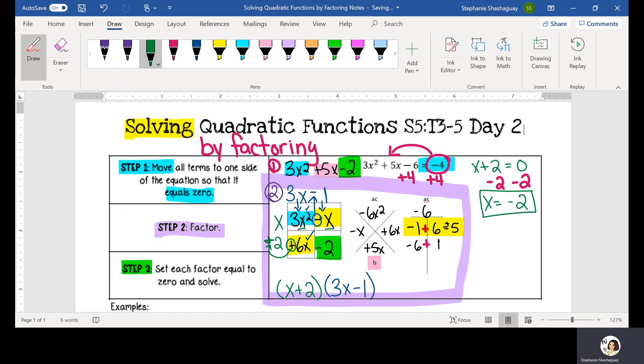Then I'm going to take my three x minus one and set that equal to zero and solve for x. So I'm going to add one and add one. So three x is equal to one. Then I need to divide by three and divide by three. And x is equal to one third.